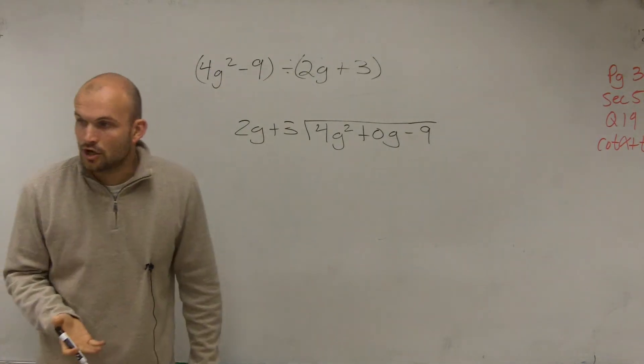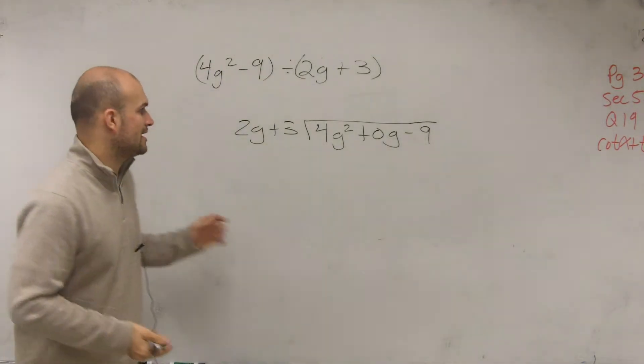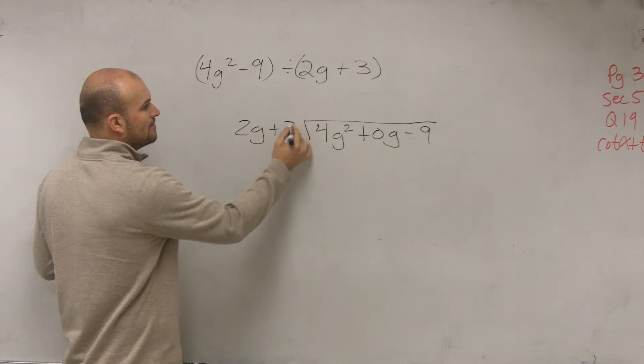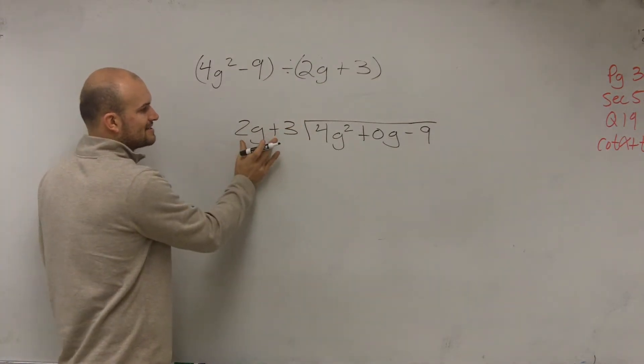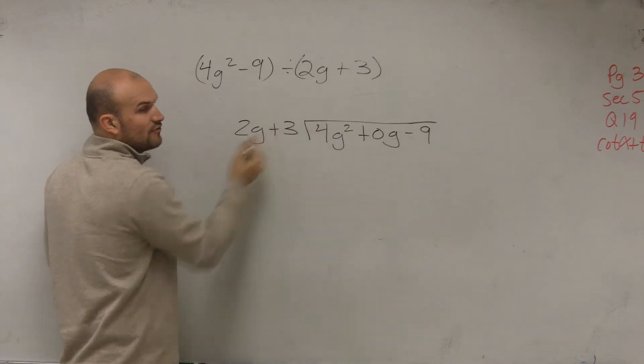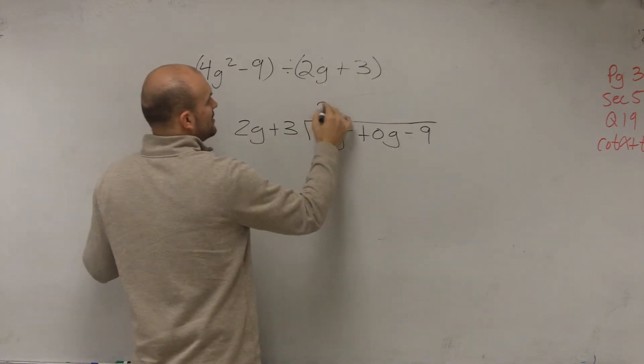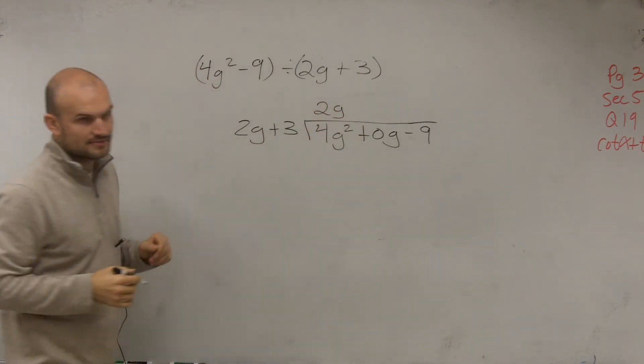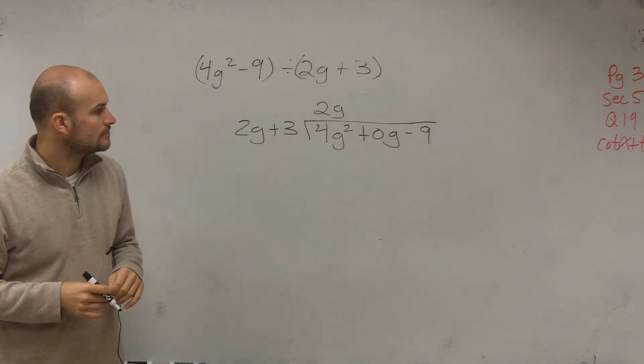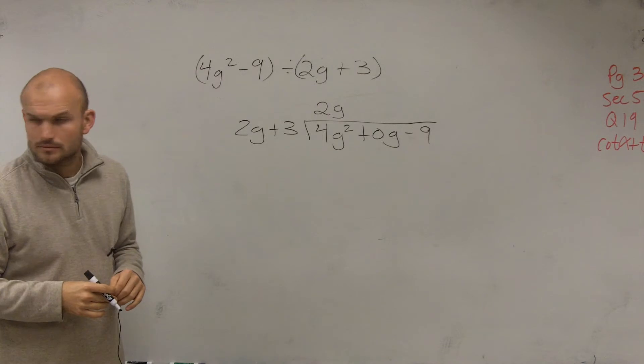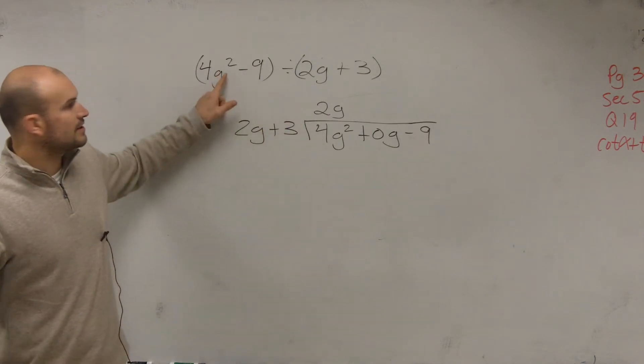So now let's just go through the long division algorithm and work through it. We've got to make sure this is in standard form, which it is, a binomial with our large term first. Then I just take 2g divided into 4g squared, and that goes in there 2g times. That's 4g squared, part of your answer.